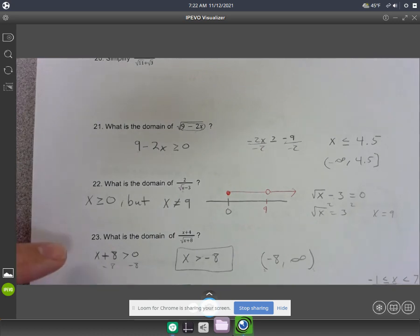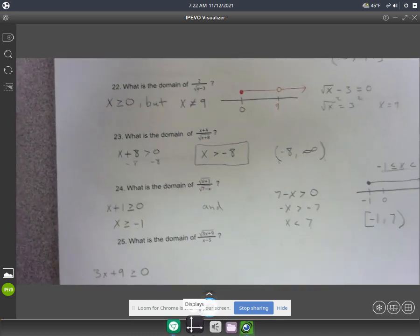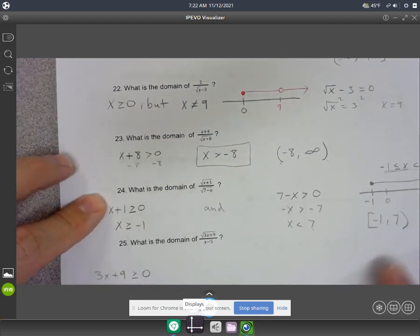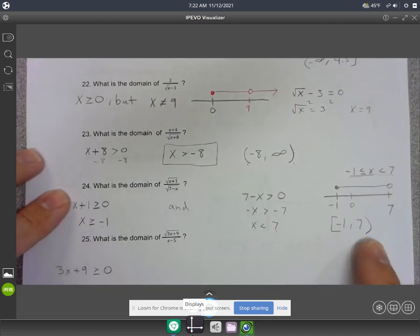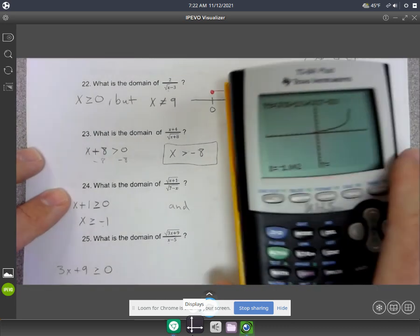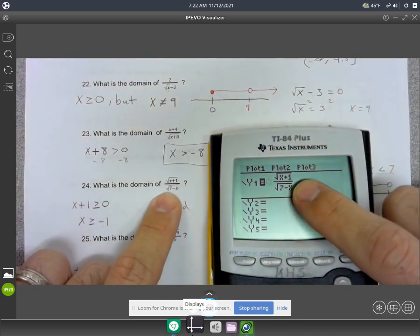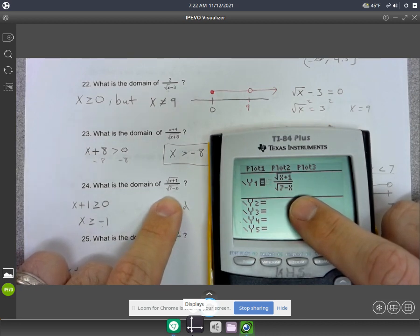So what I'm going to do is I'm going to graph number 24 here and try to point out why the domain is negative 1 to 7. So I'm just going to graph this function just how it is in the calculator. I've got square root of x plus 1 over square root of 7 minus x, and then zoom standard to graph it.